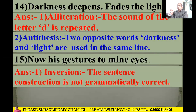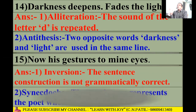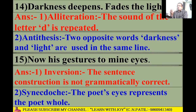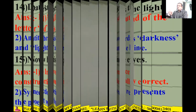Next line: 'Now his gestures to mine eyes.' Inversion is there because the sentence construction is not grammatically correct. Synecdoche is also there because the poet's eyes represent the whole poet — 'eyes' refers not only to that part but to the complete poet.